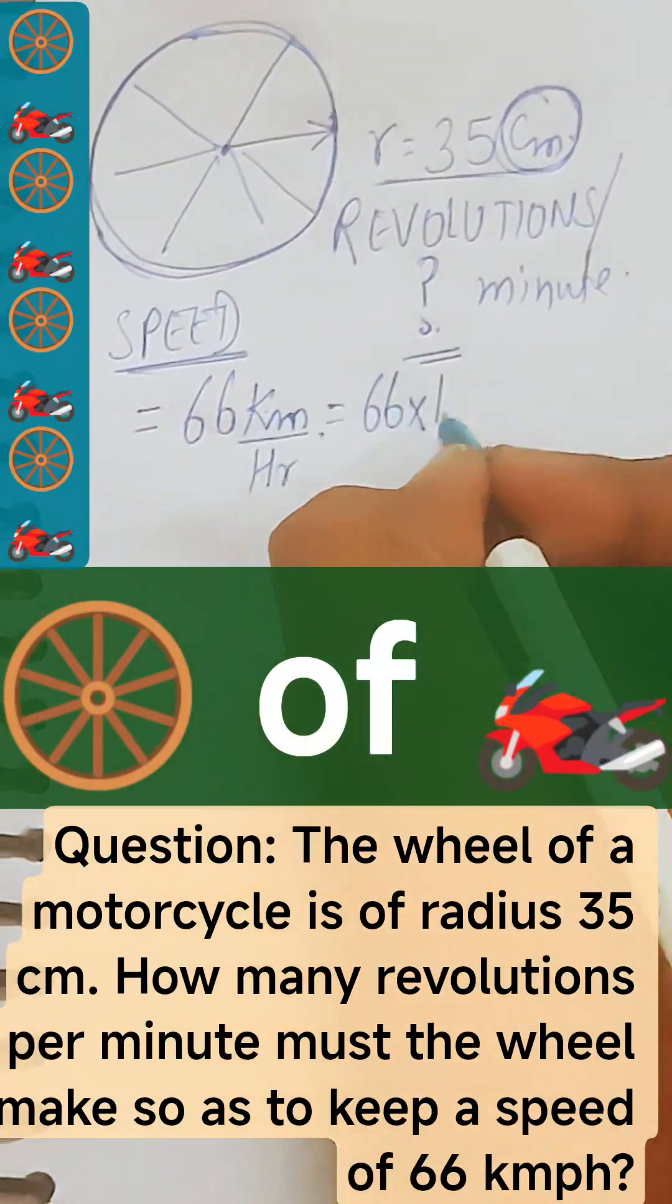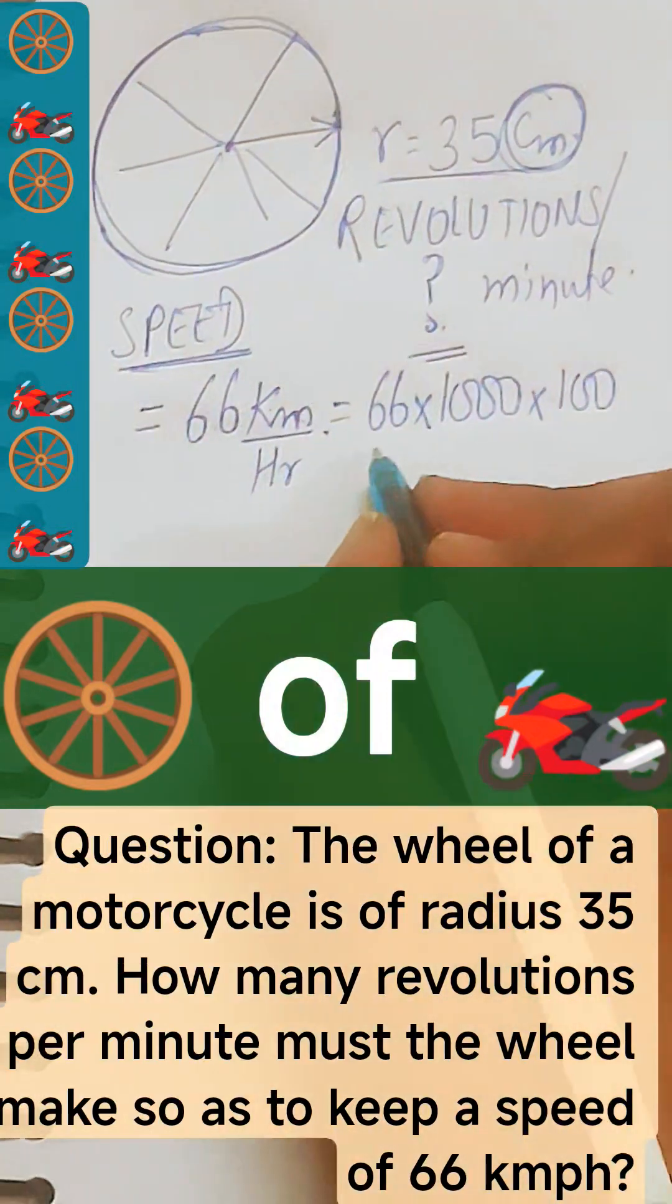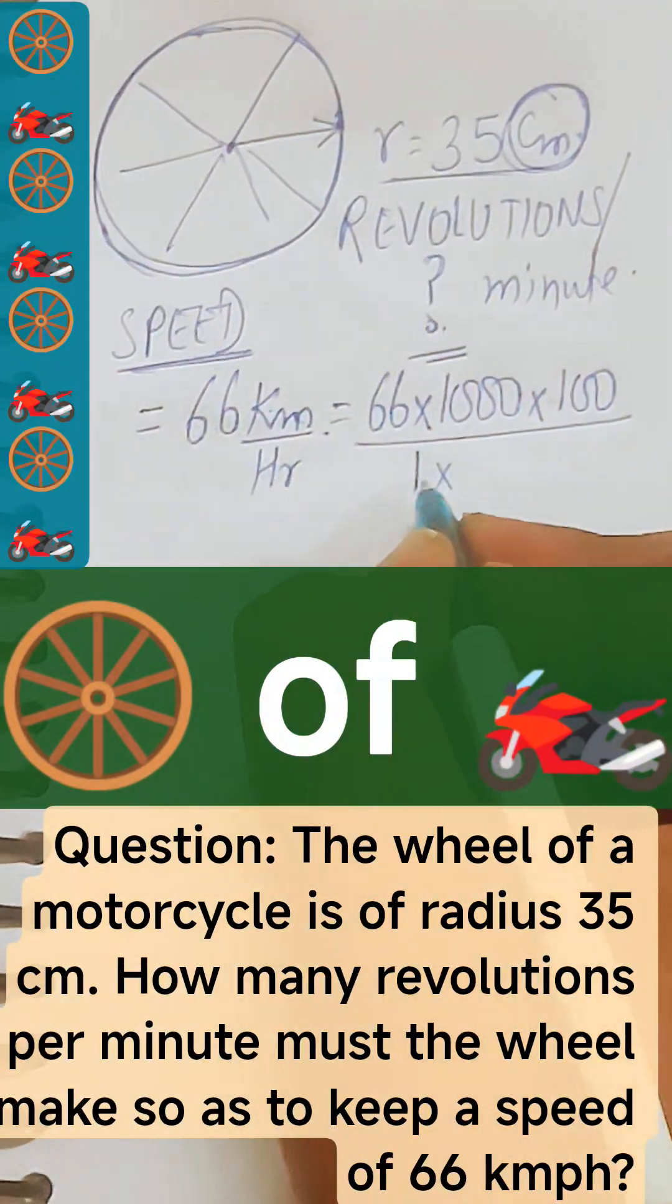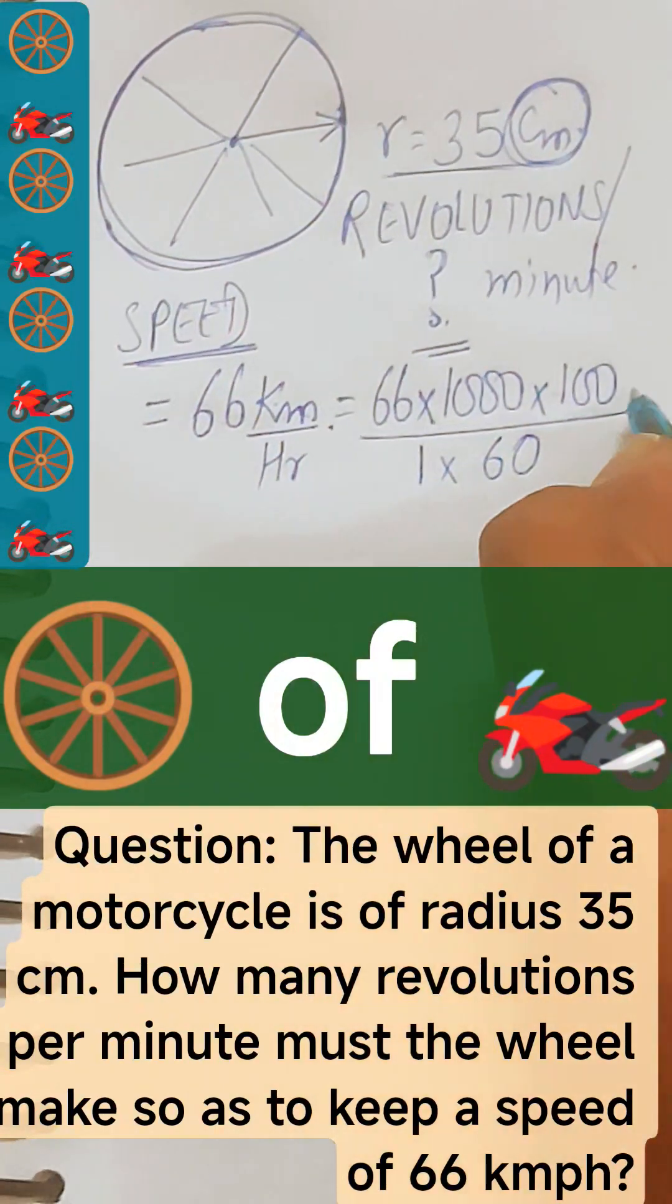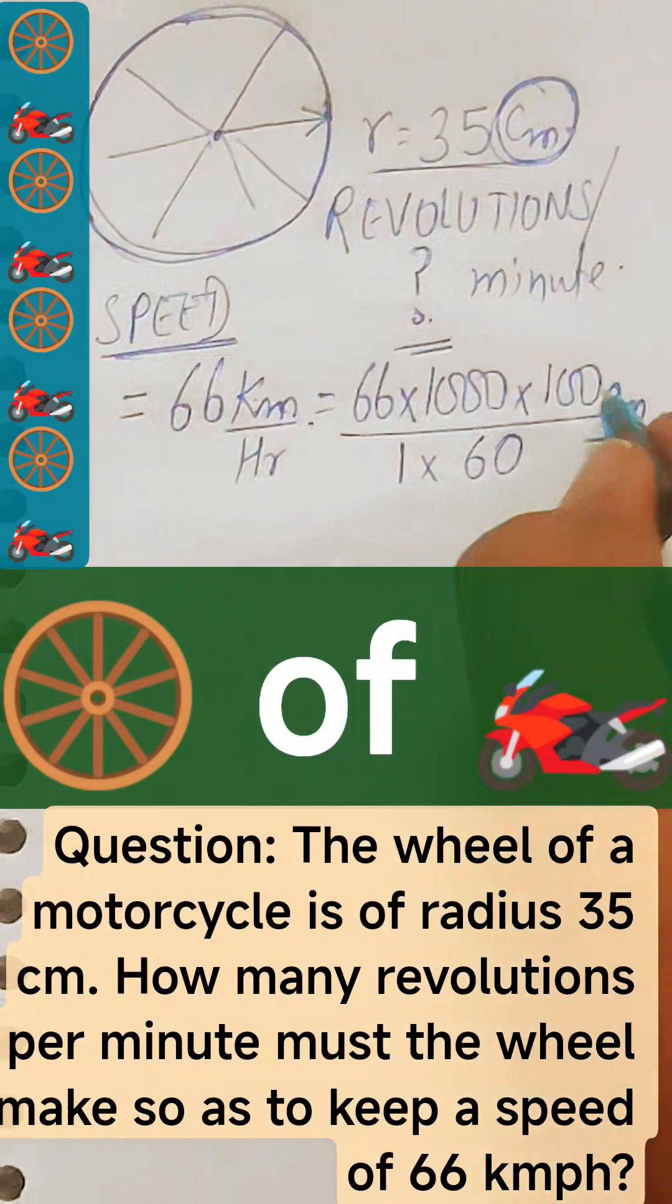So this will give you 66 into 1000, 1 kilometer is 1000 meter and 1 meter is 100 centimeter. So this much of centimeter, and if this hour is converted into minutes multiply with 60. This will give you this much of centimeter per minute, this will be the speed.